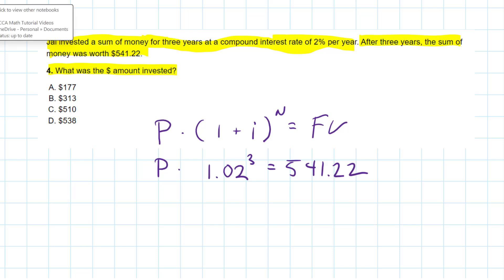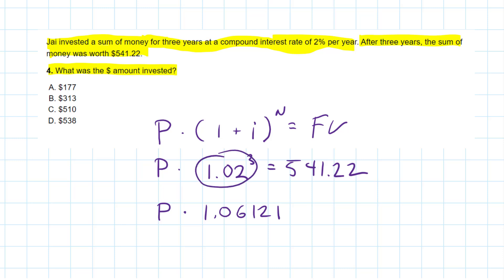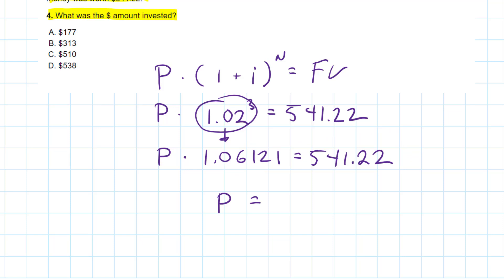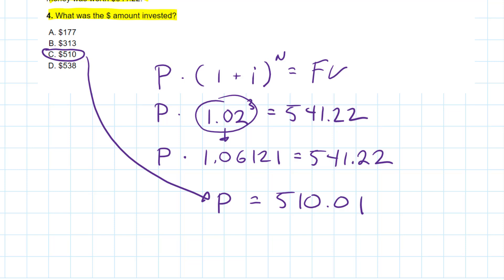We can simplify further. P multiplied by 1.06121 — that's 1.02 to the power of 3 — equals 541.22. Now we divide both sides by 1.06121, and we get P equals $510.01. So to the nearest dollar, the answer is C. That's another example of isolating an unknown in a basic formula.